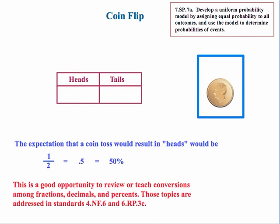Let's look at a simple probability context, that of flipping a coin. The expectation would be that a coin toss would result in heads, and that would be 1/2 or 0.5 or 50%. Now a footnote here is that this is a good opportunity to review or teach conversions among fractions, decimals, and percents.